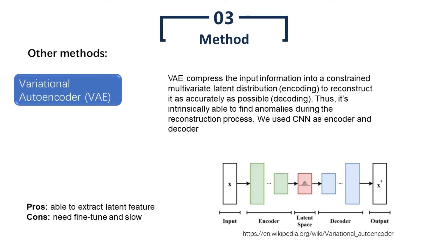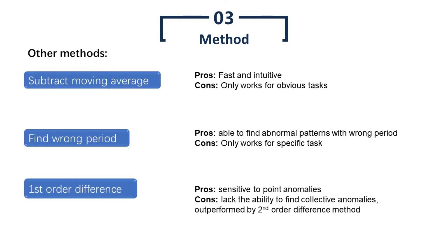Besides the methods we used above, we also tried some other methods. They are also suitable in our framework, but not used in default settings due to some weaknesses we will discuss in the following slides. Variational autoencoder, VAE, performs an encoding-decoding process, which compresses the input information into a constrained multivariate latent distribution to reconstruct it as accurately as possible. Thus, it's intrinsically able to find anomalies during the reconstruction process. We tried to use CNN as encoder and decoder. It works well for some files and is able to extract hidden latent features, however, it requires manual fine-tune and cost lots of time. Here shows some other methods we have tried. One is directly subtracting smooth signal, moving average, from the original signal, but it only works for easy and obvious tasks. We also tried methods like finding the wrong period of the patterns or processing first-order difference. However, these methods only work for some specific tasks.